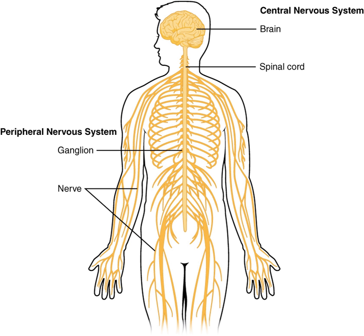The CNS consists of two major structures: the brain and spinal cord. The brain is encased in the skull and protected by the cranium. The spinal cord is continuous with the brain and lies caudally to the brain. It is protected by the vertebrae.